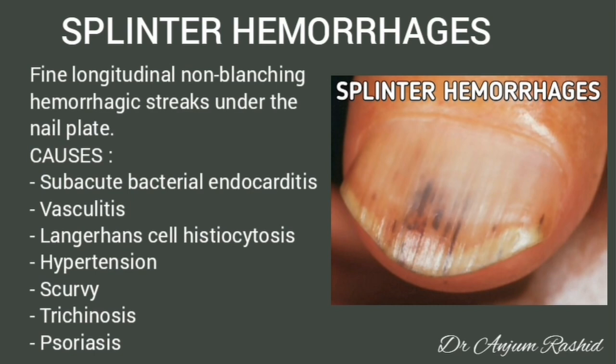Splinter hemorrhages: these are fine longitudinal non-blanching hemorrhagic streaks under the nail plate. Causes include subacute bacterial endocarditis, vasculitis, Langerhans cell histiocytosis, hypertension, scurvy, trichinosis, or psoriasis.